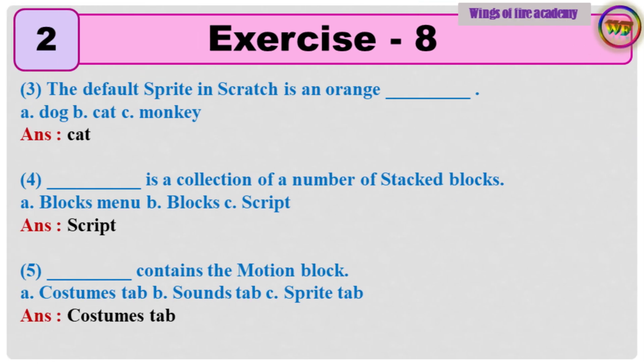Question 3: The default sprite in Scratch is an orange blank. Answer: Cat. Question 4: Blank is a collection of a number of stacked blocks. Answer: Script. Question 5: Blank contains the motion block. Answer: Costumes tab.